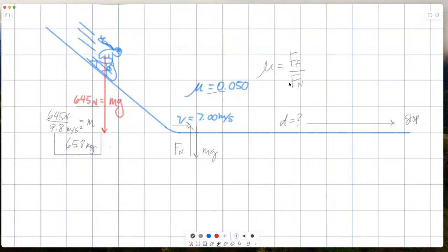So mu is equal to friction force over normal force. So then normal times mu, F normal times mu will give us the friction force. Well, we know normal is 645 and we know mu is 0.50. So 645 times 0.05 is 645 times 0.05, 32.25. So the friction force equals 32.25 newtons.